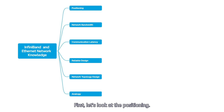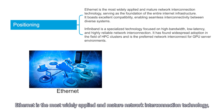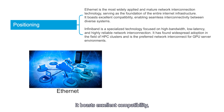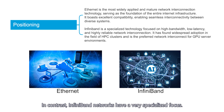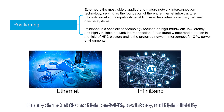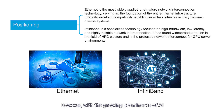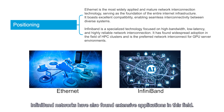First, let's look at the positioning. Ethernet is the most widely applied and mature network interconnection technology, serving as the foundation of the internet and various industry-wide information systems. It boasts excellent compatibility, enabling seamless communication between diverse systems. In contrast, InfiniBand networks have a very specialized focus, with key characteristics of high bandwidth, low latency, and high reliability. InfiniBand interconnect technology is primarily utilized in the HPC domain. However, with the growing prominence of AI and its demanding network communication requirements, InfiniBand networks have also found extensive applications in this field.